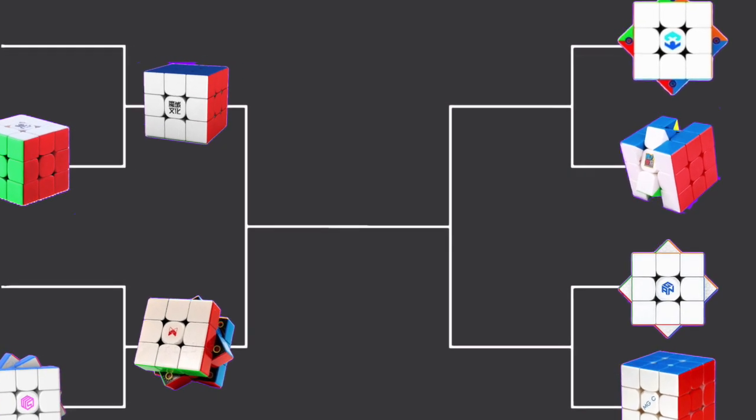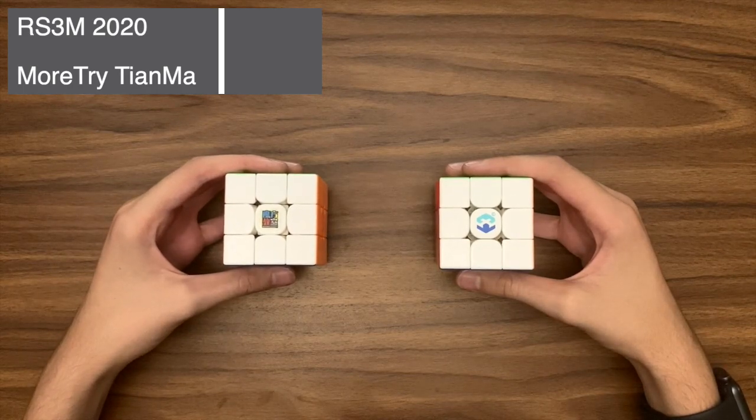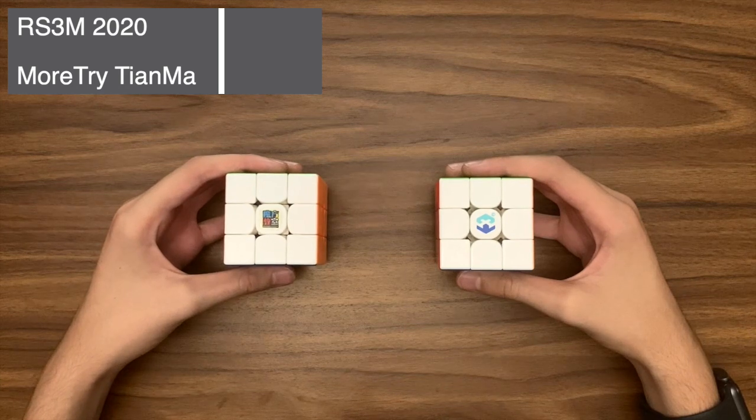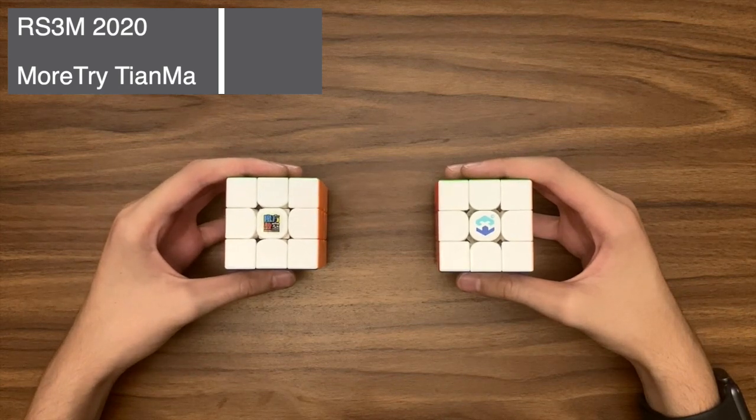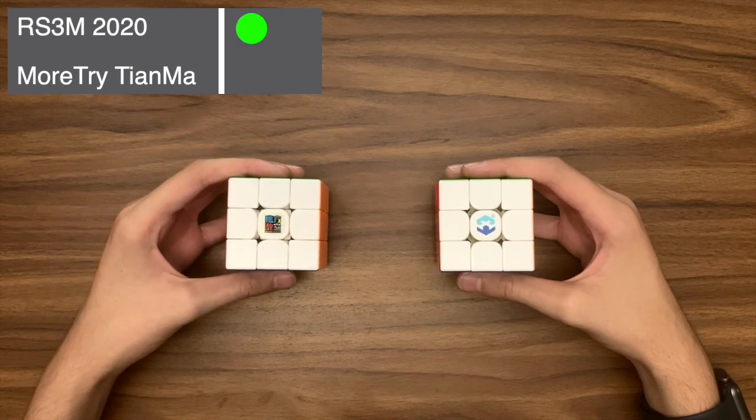Onto the other side now with the Maltry Tyanmar X3 versus the RS3M 2020. I'm going to change this one up a little bit and start with value for money. And I think you all know which one wins this category. Despite the Tyanmar having loads of amazing features, at a price of just under £10, the RS3M has to win this.